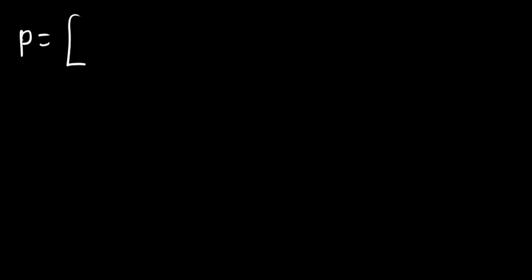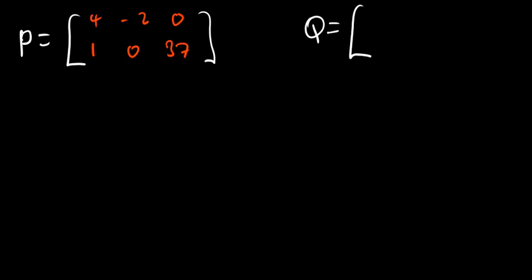Let's try another one — you can pause the video and try to solve it yourself. Let's say we have matrix P equal to 4, negative 2, 0, 1, 0, 37. And matrix Q equal to negative 4, negative 2, 2, negative 8, 3, 6. Remember, you can only add or subtract matrices with the same number of columns and rows.